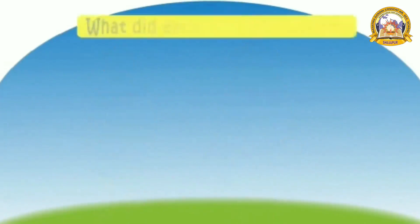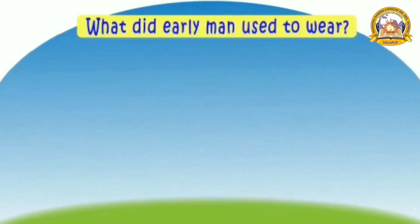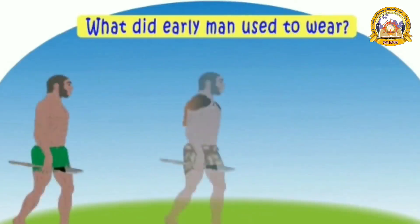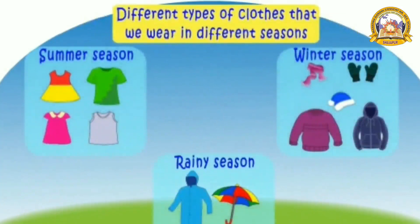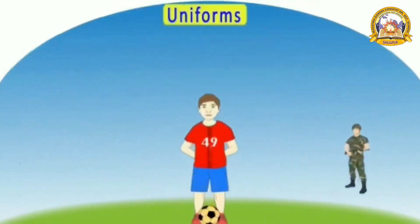Do you know what early men used to wear? Early men used big leaves, animal skins, and even the bark of trees to cover their bodies. Today we learned about clothes, their importance, and the different types of clothes we wear in different seasons, and also about uniforms.